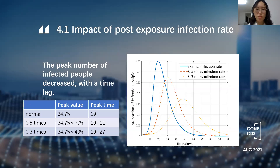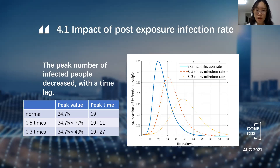We change the infection rate after exposure and simulate the change in the number of infected people. Under normal circumstances, the proportion of infected people will reach the peak in 19 days, accounting for about 34.7%. When the infection rate is 0.5 times, the peak value is about 77% of the normal infection rate peak value, and the time lag of the peak value is about 11 days. When the infection rate is 0.3 times, the peak value is about 49% of the normal infection rate peak value, and the time lag of the peak value is about 27 days. This shows that reducing the transmission rate after contact can significantly control the development of the epidemic and relieve the pressure on medical supplies.